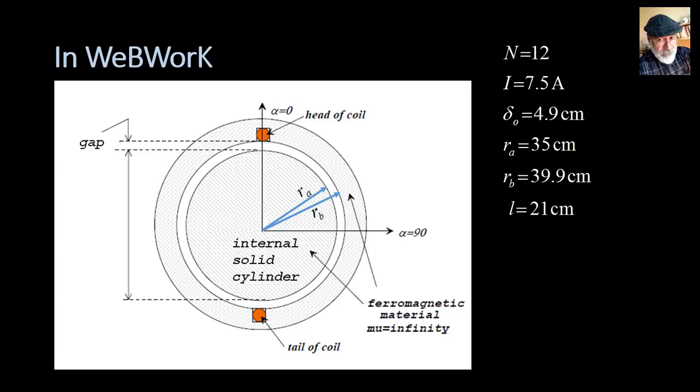The length of the whole machine into the page is 21 cm. Because they tell us that the ferromagnetic material has an infinite permeability mu, we conclude that the magnetic field inside the iron is null, is zero.